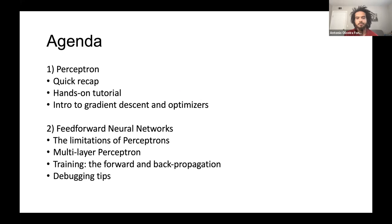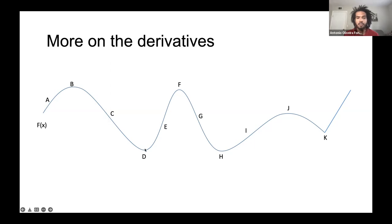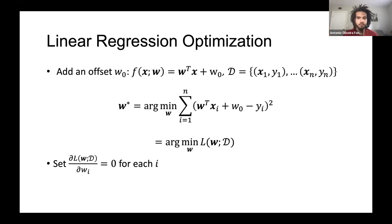So now we start with the quick recap. If you guys remember, we talked about what it means to solve linear regression — finding the optimal set of weights that give the best approximation of how I can combine the features of my input. X corresponds to my input data entries, and Y is what I'm trying to approximate. I'm trying to find a combination of those features to get as close as possible to the true value, which is my Y.